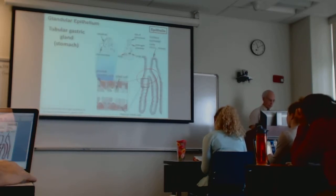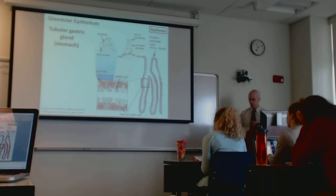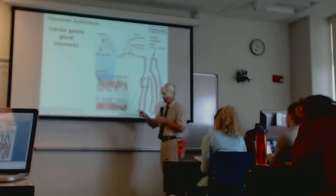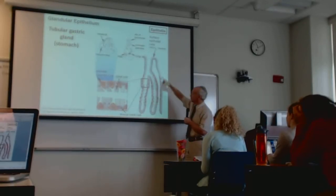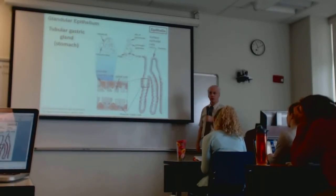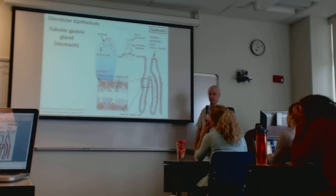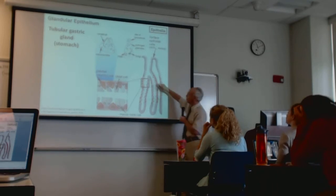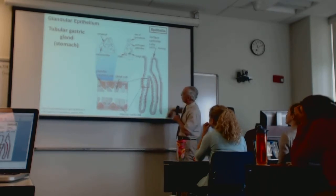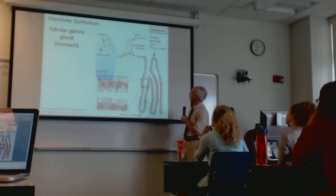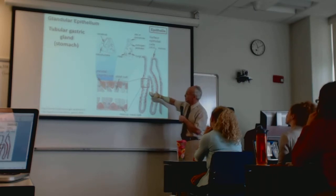Don't assume glands are just simple cuboidal cells surrounding a single lumen — they can have rather remarkable shapes. There are glands in the stomach and the intestine; in both cases they have this branched tubular conformation and a variety of cell types serving a number of functions. In the stomach the glands are called pits.